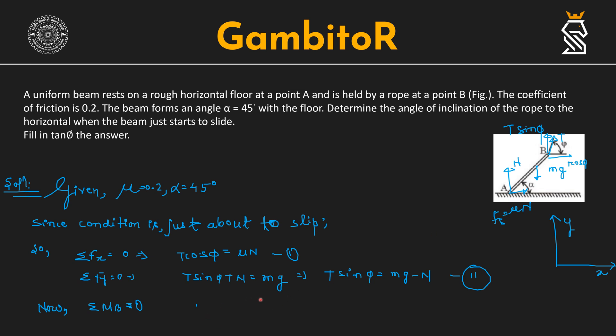Now we will proceed. Horizontally we have force balance, vertically we have force balance. Horizontally the force balance equation is T cos phi equal to mu N, or N equal to T cos phi divided by mu.